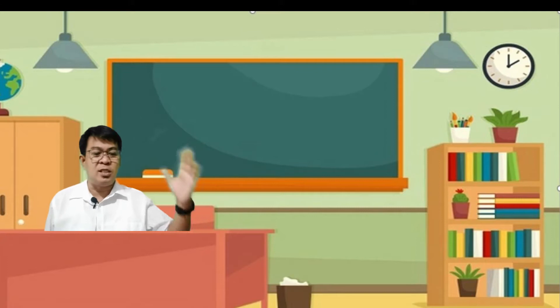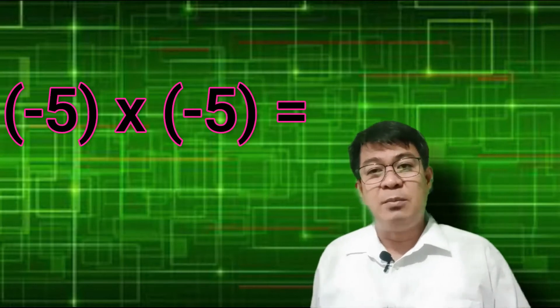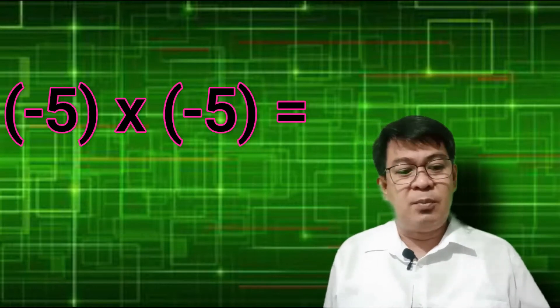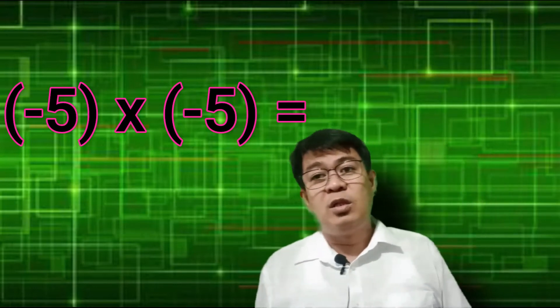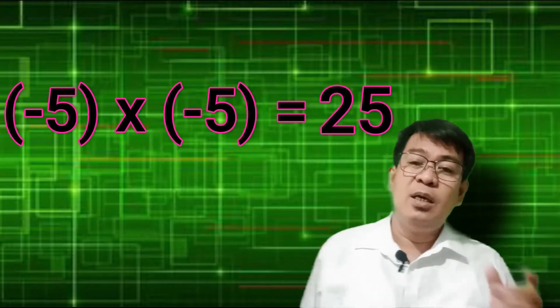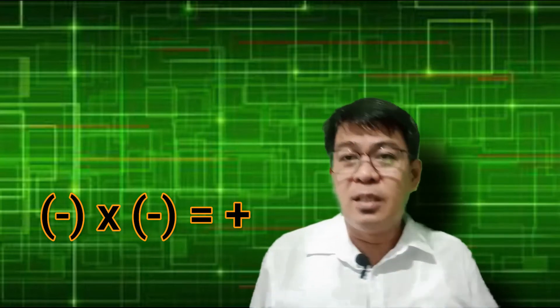I'm going to give you an example. Negative 5 times negative 5. Both are in closing parentheses. Negative 5 times negative 5 is equal to positive 25. Why? Because our rule is, when you multiply a negative number by a negative number, that is equal to a positive number. So the answer is positive 25.